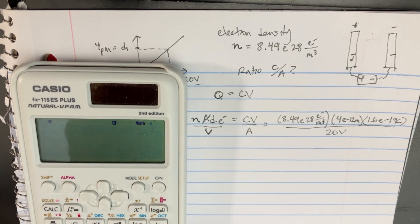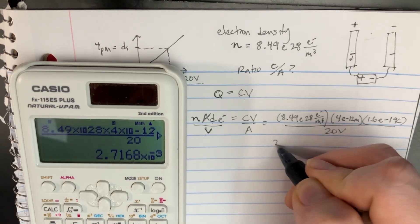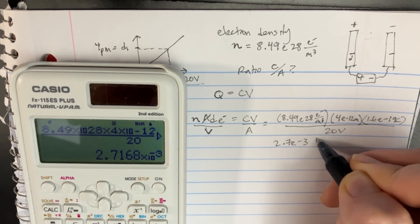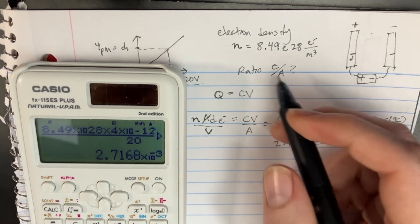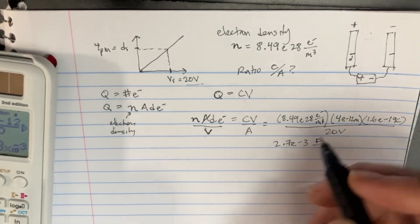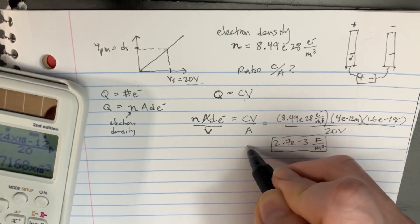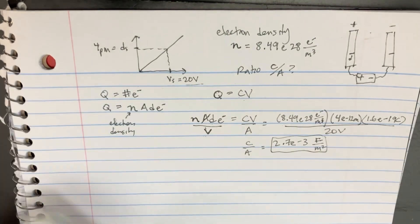And yeah, that would be the correct answer. So 2.7 e to the negative 3, and I suppose this is farads over meters squared because it's area. So that's going to be what C over A is equal to. Interesting.